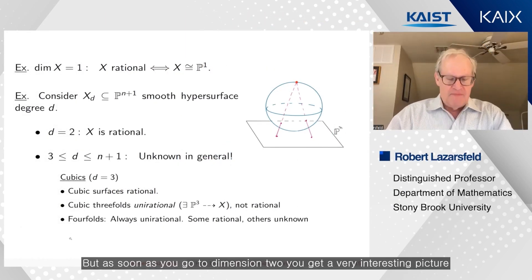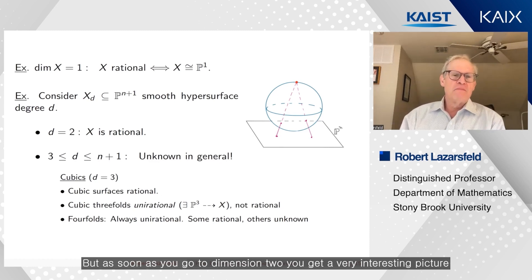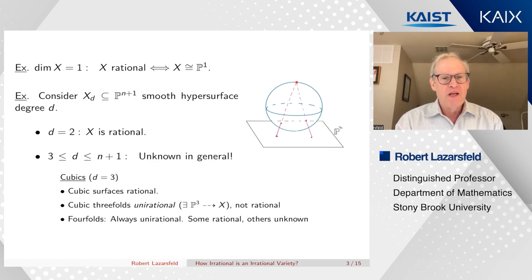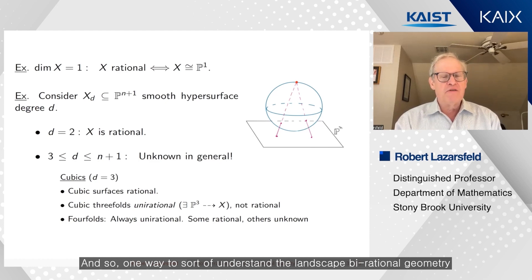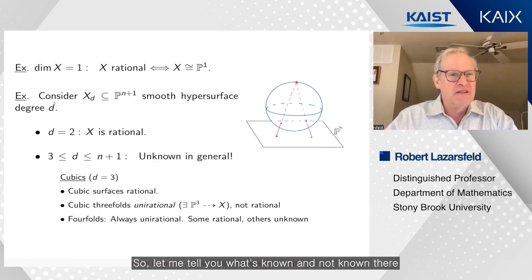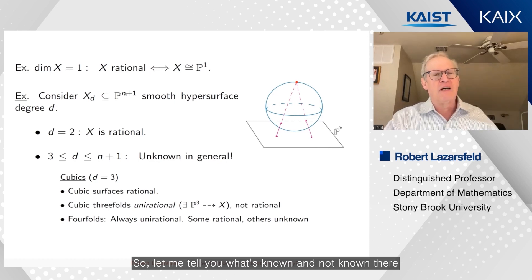But as soon as you go to dimension two, you get a very interesting picture that's been both classically and recently the subject of a huge amount of activity. And so one way to understand the landscape of birational geometry is to look at what happens for smooth hypersurfaces of dimension n and degree d.